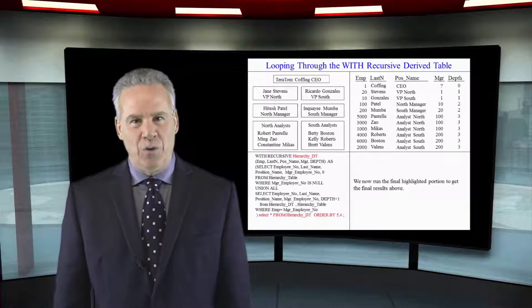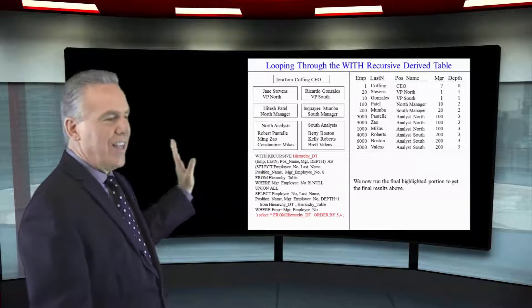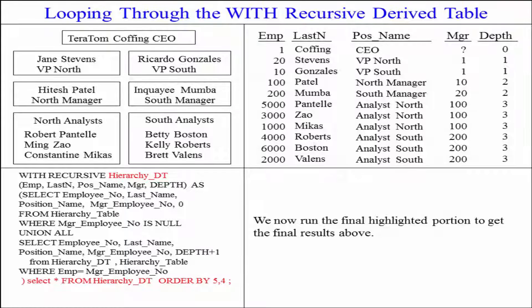Now that we're done looping we actually see the close paren and then a select statement where we pull in the information from our recursive derived table and that's what actually builds the report.